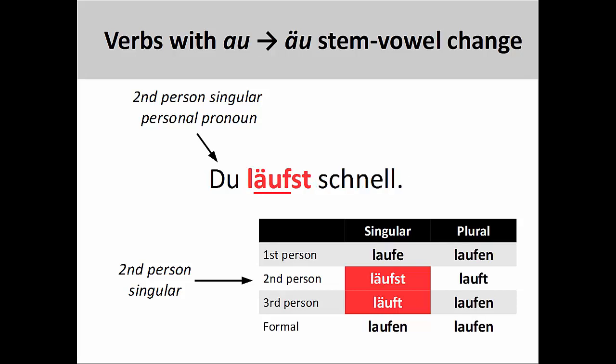There are also a few irregular and strong verbs that do not fit into the groups we just looked at. Again, these simply need to be memorized. Some verbs, for example, have a stem-vowel that changes from u to umlaut-u, as in 'du läufst schnell' (you run fast).